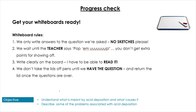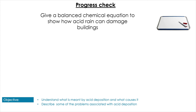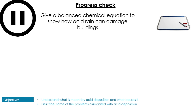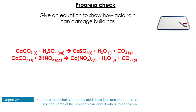It's time to test you again. Give a balanced chemical equation that shows how acid rain can damage buildings. Pause the video to give yourself some time. As long as you showed either sulfuric or nitric acid reacting with a carbonate, you would have got marks in an exam for this.